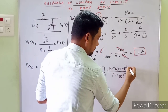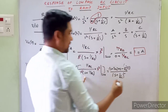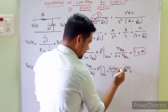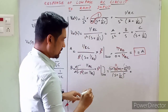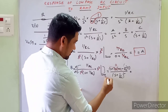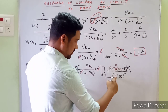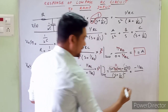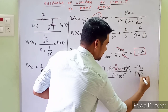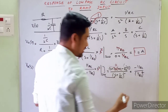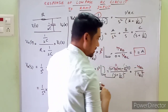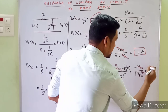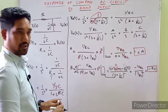After substituting s = 0, the term with s + 1/(RC) multiplied by 0 vanishes. We are left with −1/(RC) in the numerator and 1/(RC)² in the denominator. The 1/(RC) factors cancel, giving B = −RC.